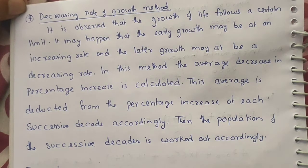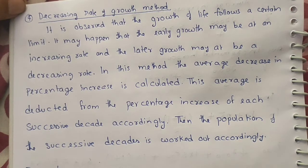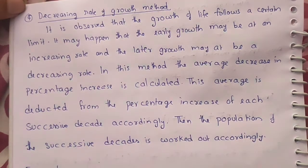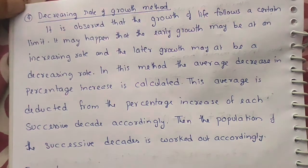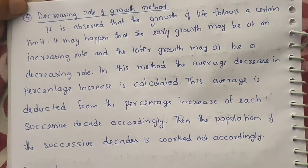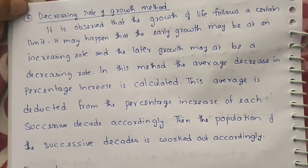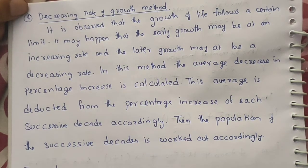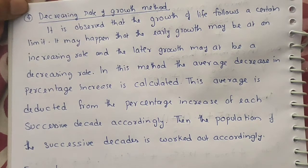It is possible that while the population is increasing, the percentage rate of increase is continuously decreasing. Initially the percentage may be growing, but in coming decades — future decades — it may not grow as much. To incorporate this, in this method we look at the average decrease in percentage increase. For example, if population grew by 40% in one decade and 35% in the next, the population is still increasing by a positive percentage, but that percentage is decreasing.